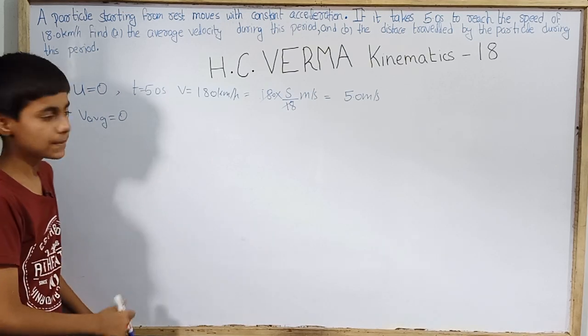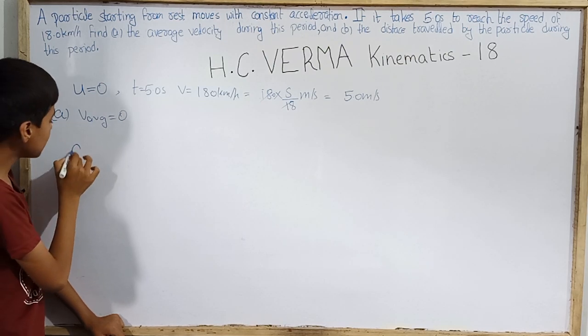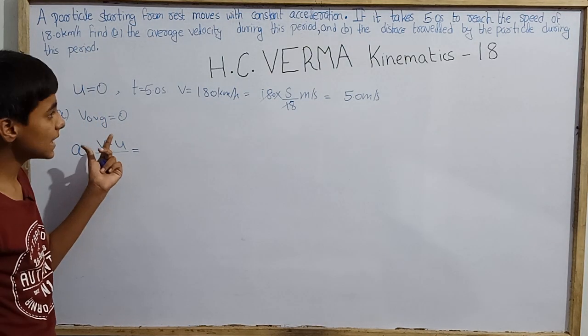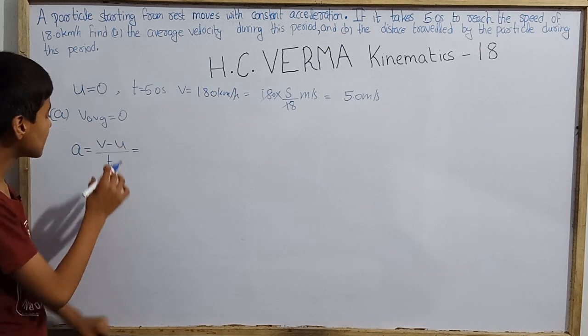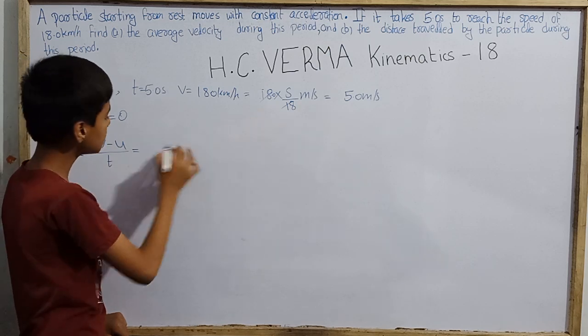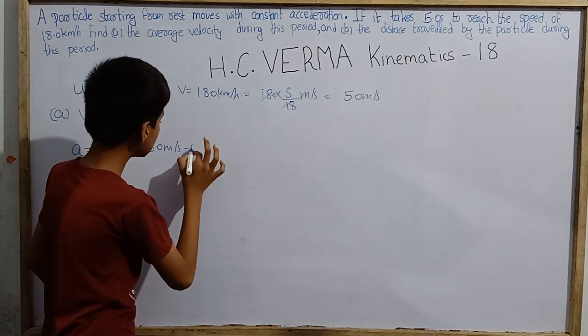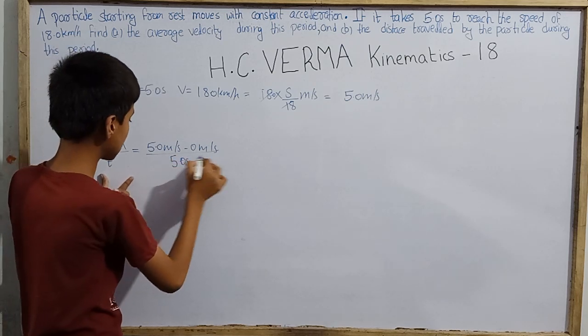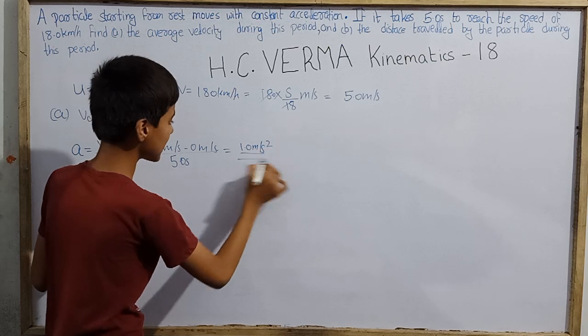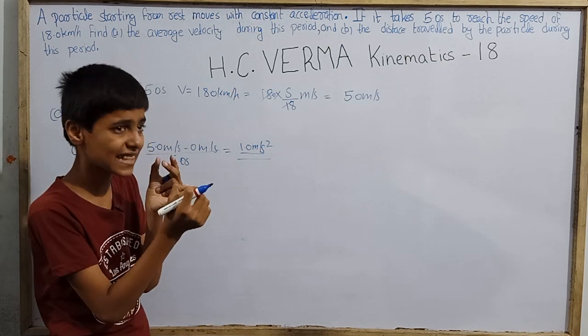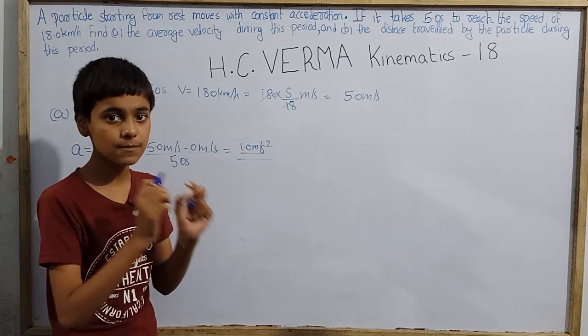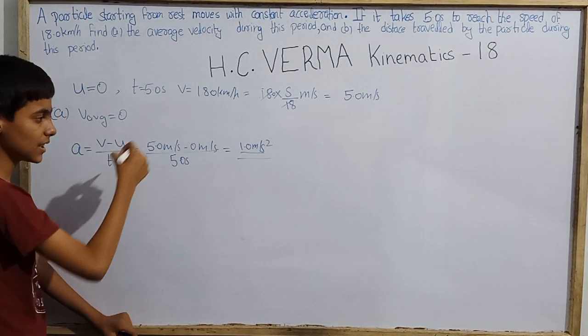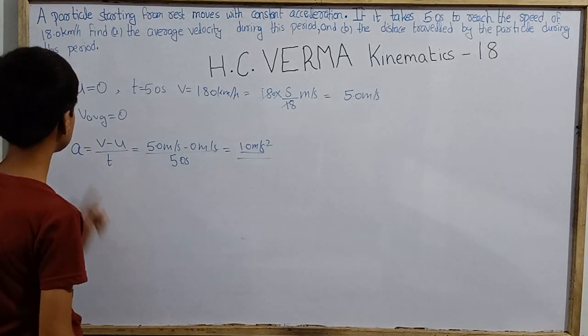This means we have to find average velocity. Let's find acceleration from here. How much acceleration will be v minus u over t. Final velocity 5.0 meter per second minus 0 meter per second over the time interval 5.0 seconds. This is 1.0 meter per second square. So by this rate particle accelerates, meaning every second its speed increases by 1 meter per second.